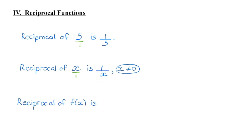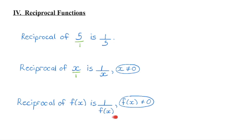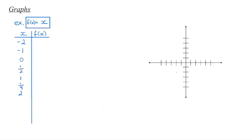If I say what's the reciprocal of any function, we're going to take that function, flip it over, and it becomes 1 over f of x. And again, f of x in the denominator cannot equal 0, otherwise we're dividing by 0 and it's undefined. This is a reciprocal function — we're going to have a variable in the denominator. Let's graph f of x equals x, then we'll graph the reciprocal function and compare those graphs.